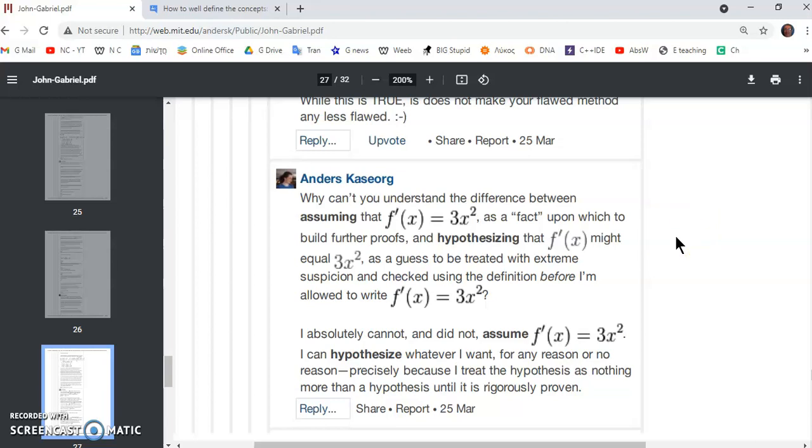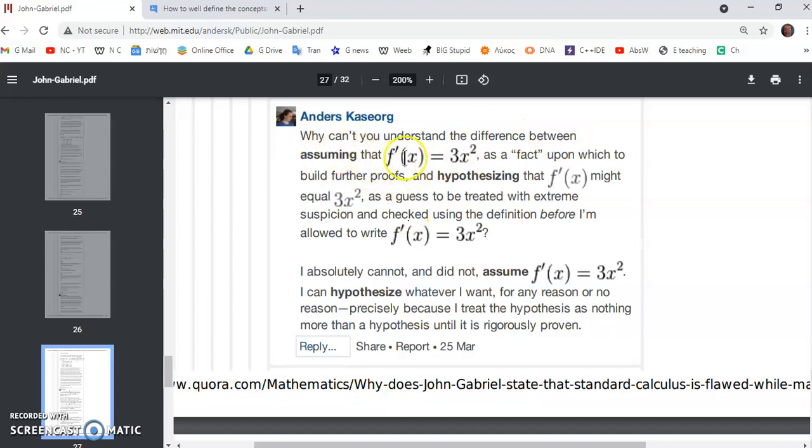Now, while it's true that you can check it using epsilon delta arguments, that was never really the crux of this argument. The crux of this argument was that the mainstream doesn't have a valid way of finding it. As I have pointed out, the new calculus does have a valid system of finding it without using limits or infinity or infinitesimals or any of that other nonsense. So then he says, and this is the guy, why can't you understand the difference between assuming that f prime of x is equal to 3x squared? Now notice, he later says, I absolutely cannot and did not assume f prime of x is equal to 3x squared. This is a master math graduate from MIT people. So he says assume it as a fact. Now, I don't know about you, but assuming anything as a fact is very dangerous in any theory, as far as I'm concerned. In fact, there is no room for assumptions in mathematics.